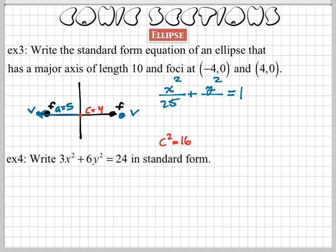So I have the 25. I know what c is. I don't know what b is. Now there's a formula that we connect the a squared and the b squared to c with. Do you guys remember that formula?